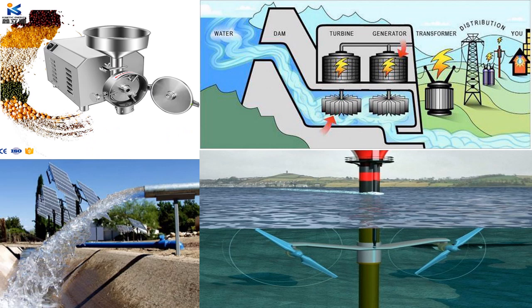Electricity can be generated by kinetic energy of sea waves. Grinding grains, pumping water, and generating electricity can be done using kinetic energy of wind. Electricity is generated in hydropower stations using kinetic energy.